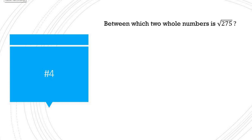This question reads: between which two whole numbers is the square root of 275? The first thing you do is use your calculator to find the square root of 275, which happens to be 16.6.